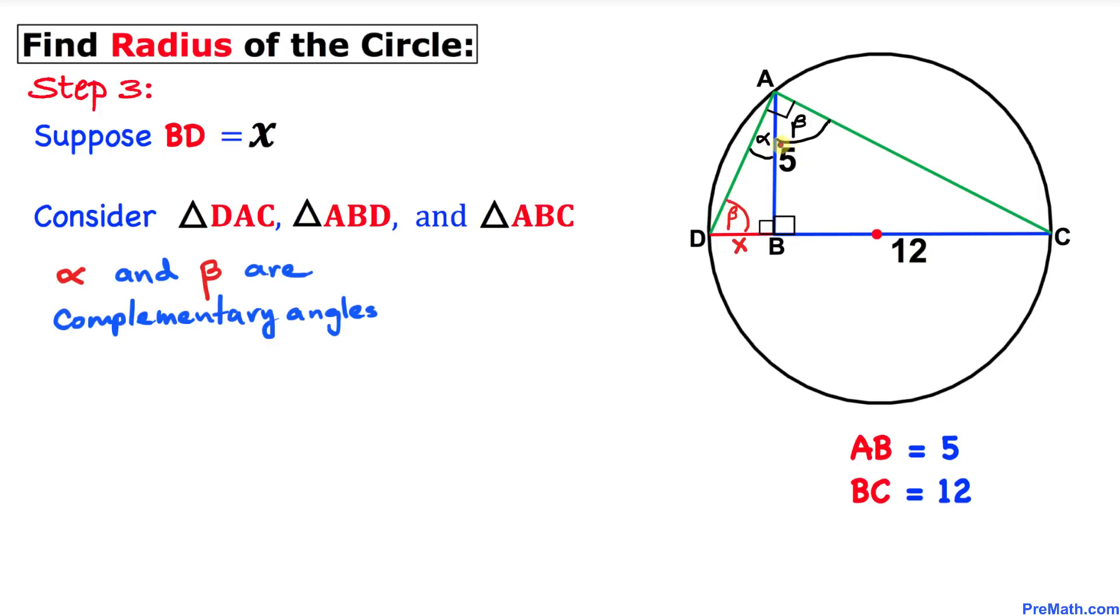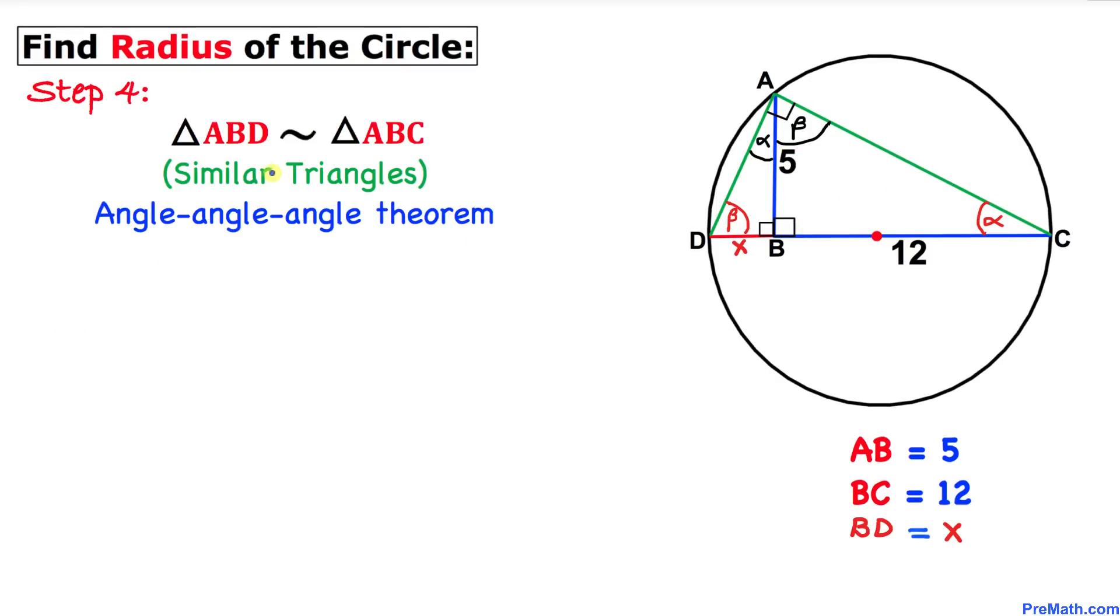Likewise, if this angle is beta and this is a 90 degree angle, then this angle has to be alpha. Thus we conclude that these two triangles, triangle ABD and triangle ABC, are similar triangles according to angle-angle theorem.